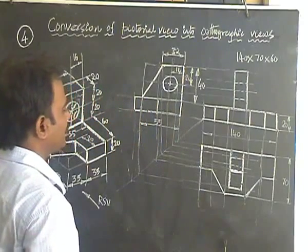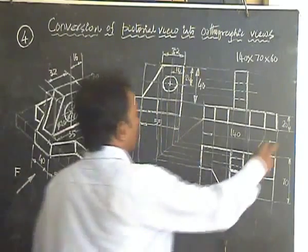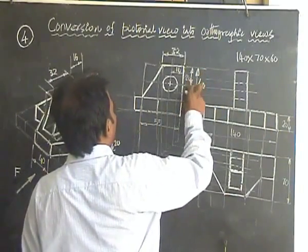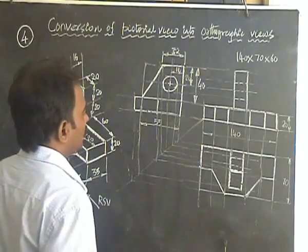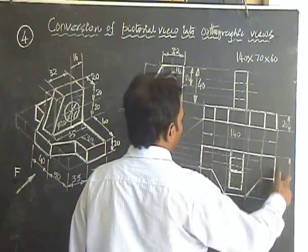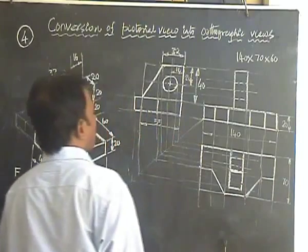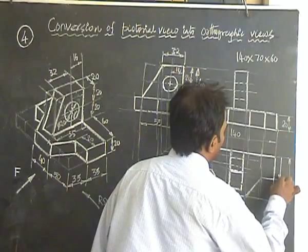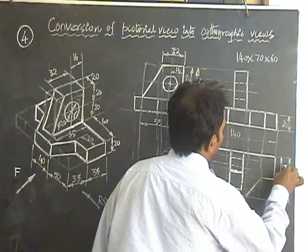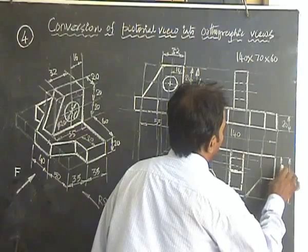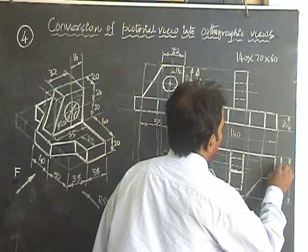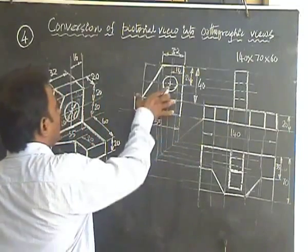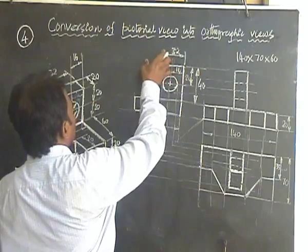Again, go to the front view to represent the center line. Mark these projected lines. Use the dotted lines to represent this circle. Let's verify the dimensions. Say the first height is 20. The remainder is 40. Again, there is a break of 20, 20, the height. Then in the breadth, you have 35 plus 35. Mark this distance as 35. Obviously, the remainder will be 35. This is 35, 35. Once again, you have 55. 55 can be divided as 32 and 23.